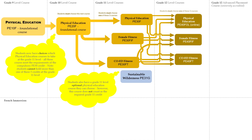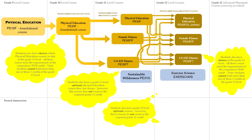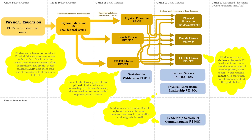Grade 12 physical education courses also offer choices. All three meet the requirements of the compulsory Phys Ed 40 credit. Note students cannot hold more than one of these three credits at the Grade 12 level. Students also have Grade 12 level optional phys ed courses; however, these courses do not count as the required Grade 12 credit.